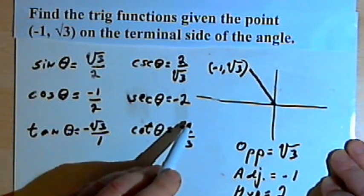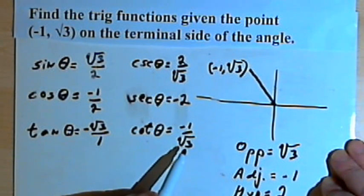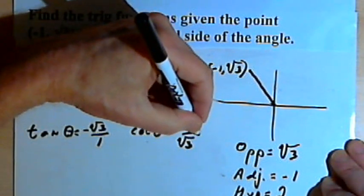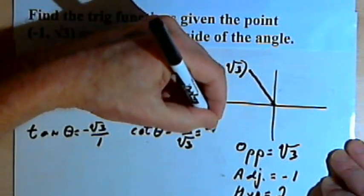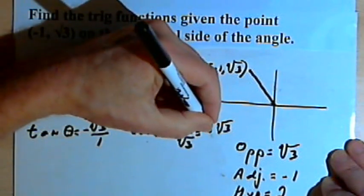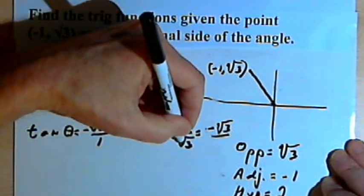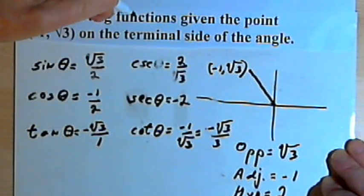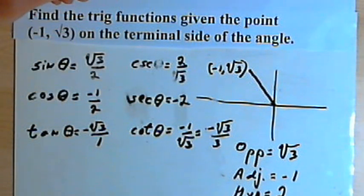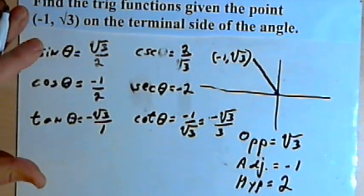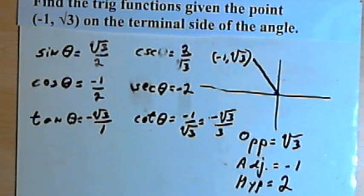To rationalize, you multiply the numerator and the denominator by the square root of 3. So this is going to be negative 1 times square root of 3 — or just negative square root of 3 — over the square root of 3 times the square root of 3, which is 3. So that's the basic concept. I'll probably do another video with some harder examples, just so you can get more practice and understand this a little better.